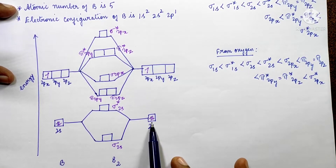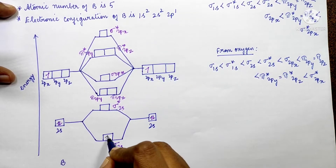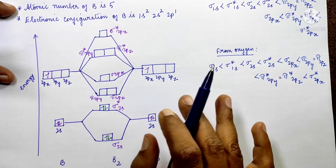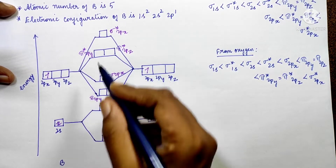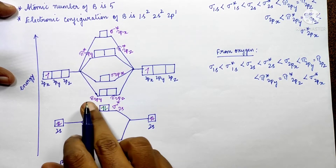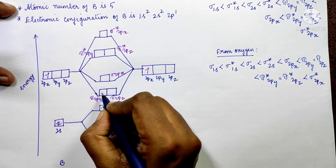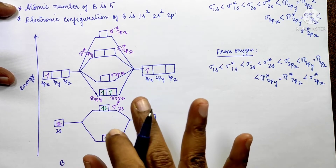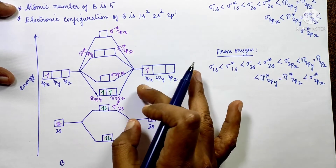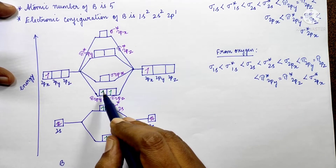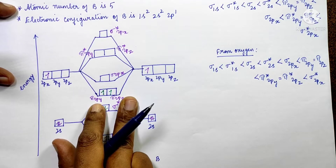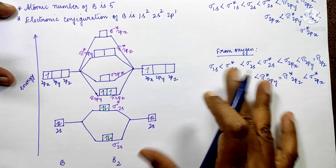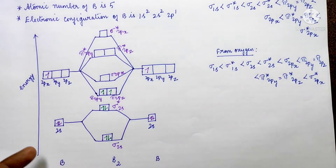Now we need to fill the orbitals with electrons. The lower energy orbitals fill first. π2py and π2pz are degenerate. Two electrons fill σ2s, then two electrons fill σ*2s. Following Hund's rule, one electron goes into π2py and one electron goes into π2pz — they fill singly before pairing. The third electron fills accordingly.